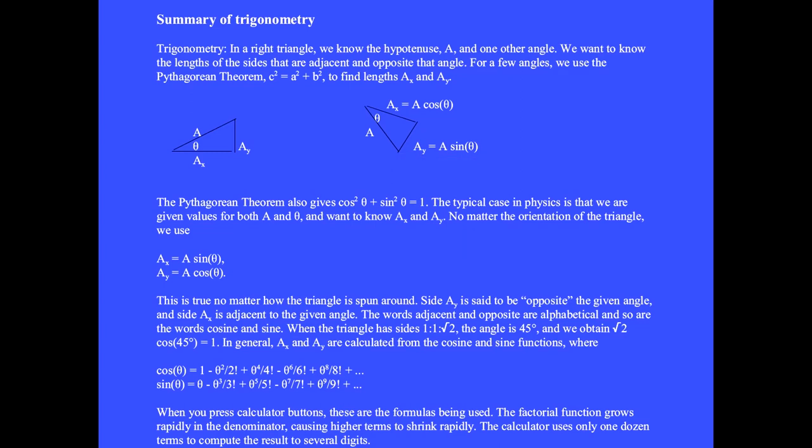In a few simple cases we can calculate the lengths of the two sides. For example, when the triangle has sides 1, 1, √2, we know the angle is 45 degrees.